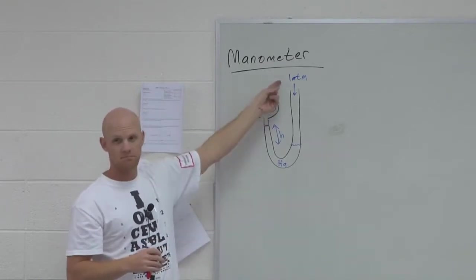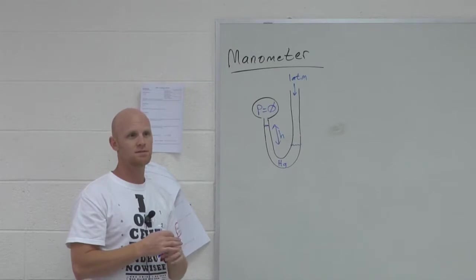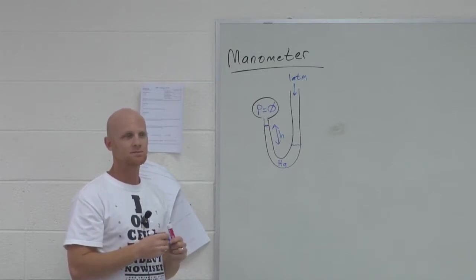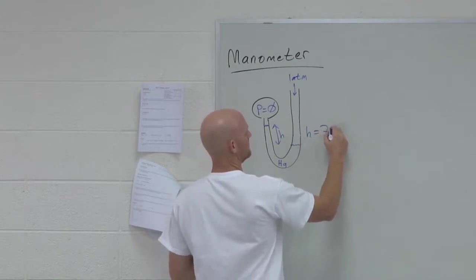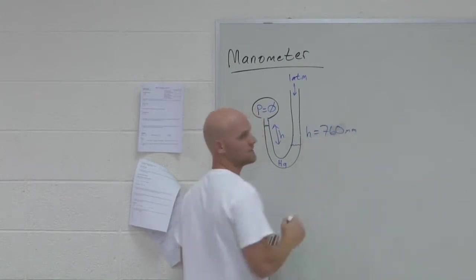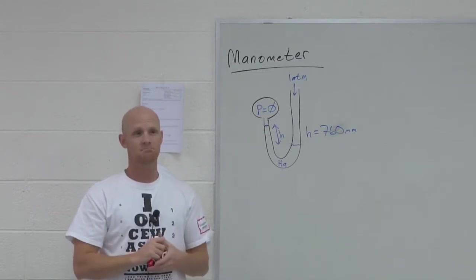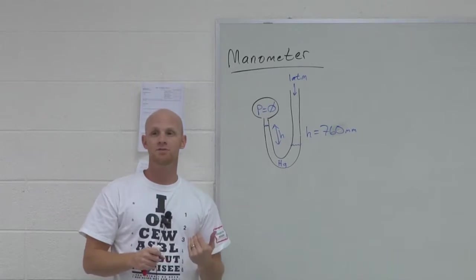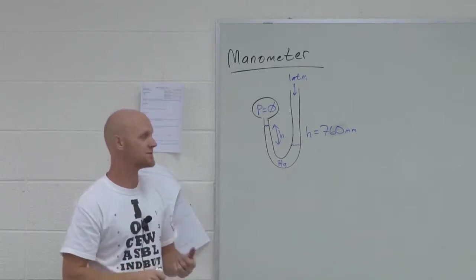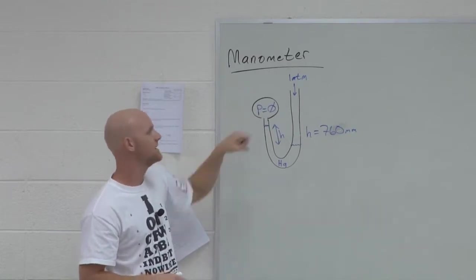And so it causes a difference in height of the two sides of the manometer. And at one atmosphere, filled with mercury, guess what that difference is? 760 millimeters, or 0.76 meters. And that's where they come up with the idea that 760 millimeters of mercury is equal to one atmosphere, because that's the height difference one atmosphere of pressure causes in a manometer.